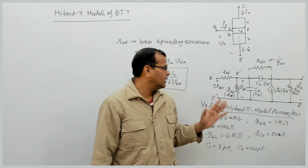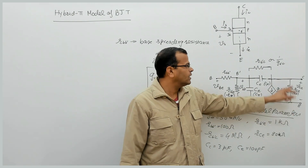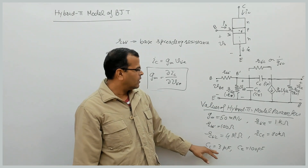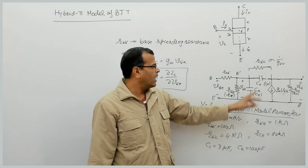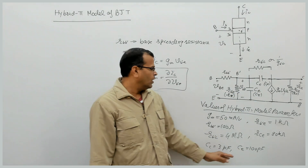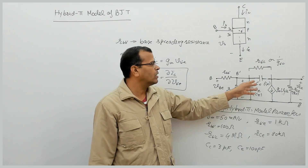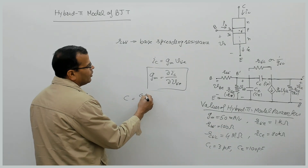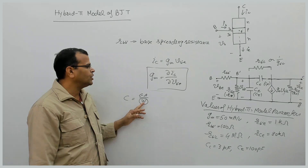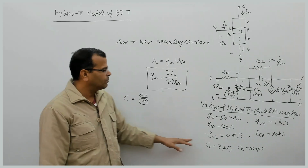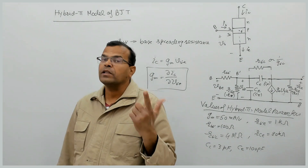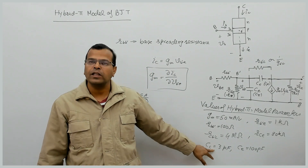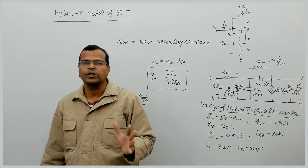RCE — the output resistance of BJT — is approximately 80 kΩ. The collector junction capacitance CC is 3 pF, and the emitter junction capacitance CE is 100 pF. The emitter junction capacitance is larger because the collector junction is reverse biased, making its depletion width large and hence capacitance small (C = εA/W).